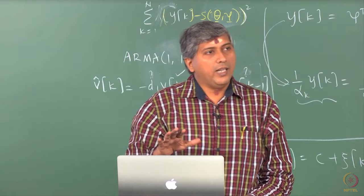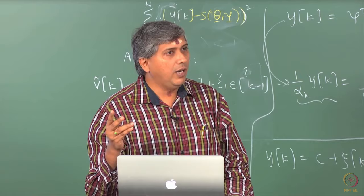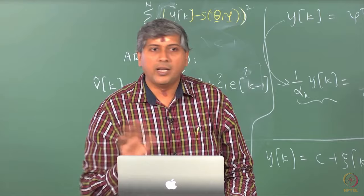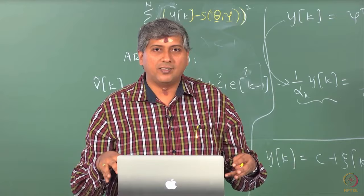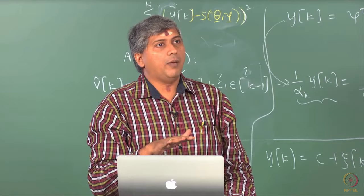So when you start the problem you have pressure and volume — two explanatory variables. In a linear world you would have as many parameters to estimate as the number of explanatory variables. But in a non-linear world you need not. In the ideal gas law case, PV is your regressor and there is only one parameter to estimate: the universal gas constant. So the number of parameters and the number of explanatory variables need not match.